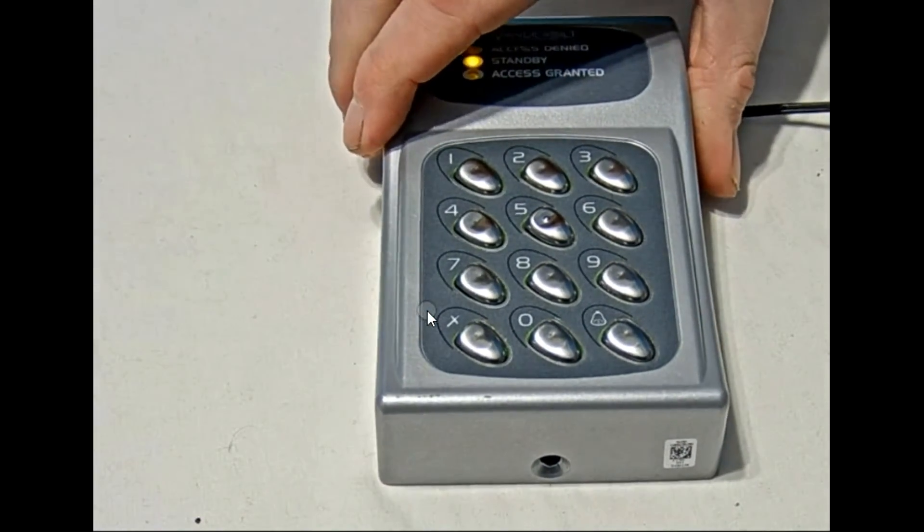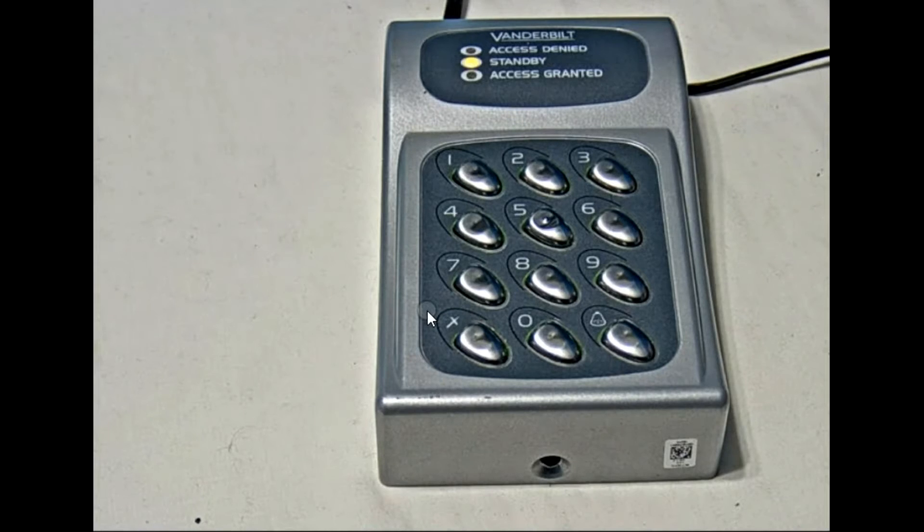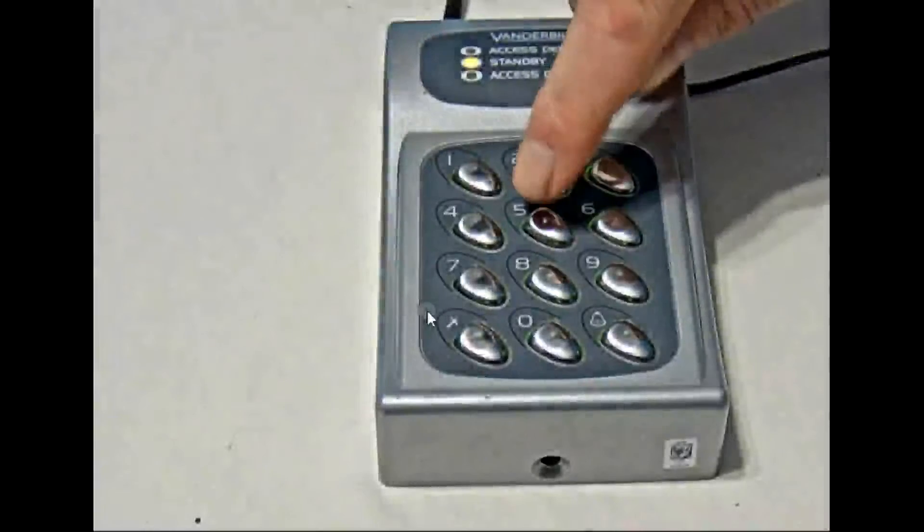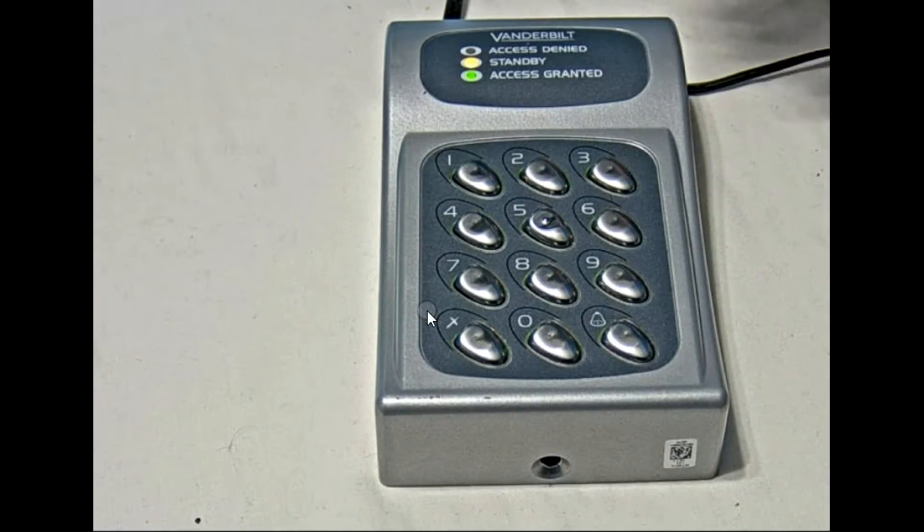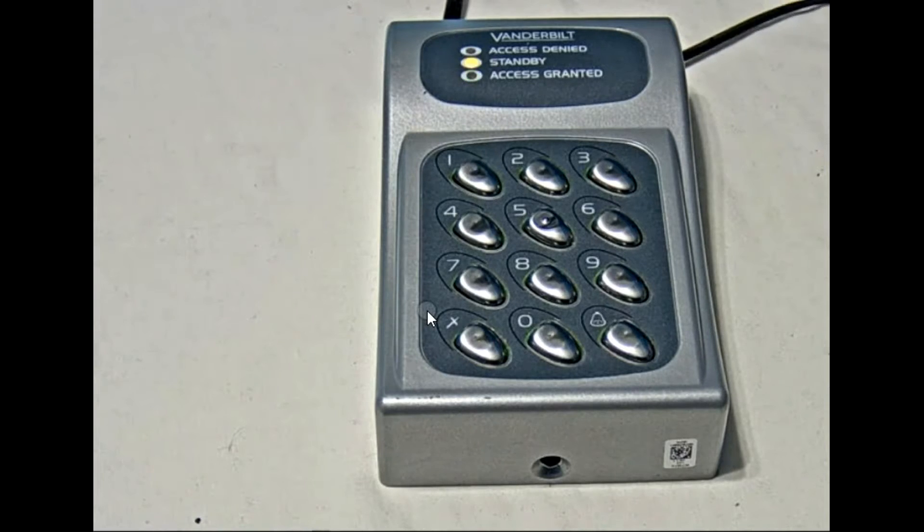And just to confirm it works, if you were to enter a valid code, a code that I've already programmed in, you'll see that access granted light comes on. So I put a valid code in, the access granted light comes on, and that confirms that the door's unlocked.